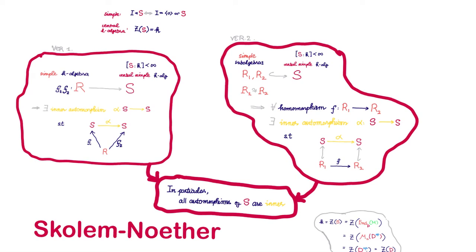In this video, we're going to give a proof of the Skolem-Noether theorem. This is one of the most fundamental theorems of the theory of central simple algebras. Later, we will show how we could use Skolem-Noether to compute the Brauer group of the reals, as well as Brauer groups of finite fields by proving Frobenius' theorem and Wedderburn's theorem. Most importantly, we are going to use Skolem-Noether to motivate the definition of group cohomology.